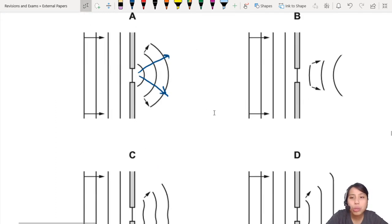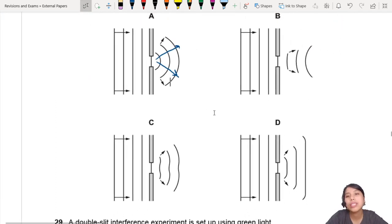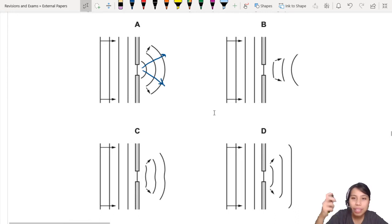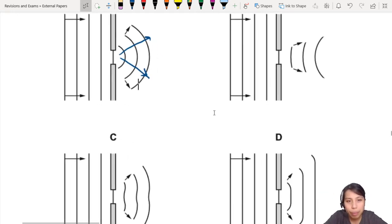But why are there so many diagrams? Which one is correct? Let's look at which one is wrong first. A is possible. I mean, yes, you spread out.